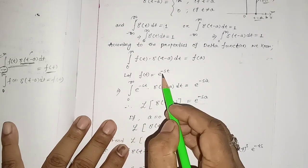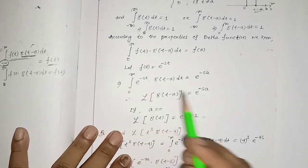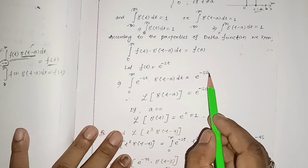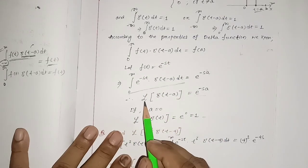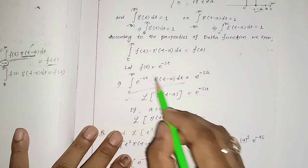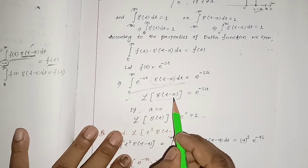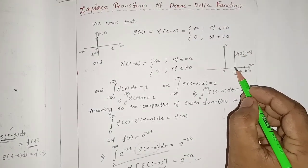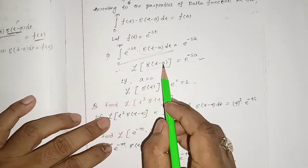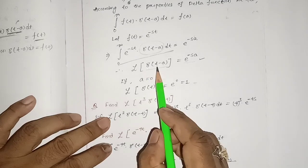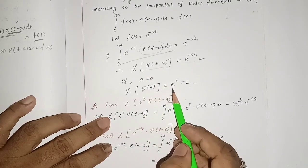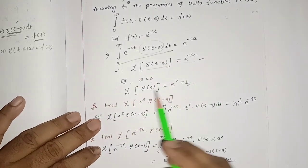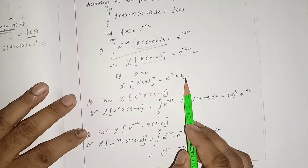Now, using this property, if we consider f(t) = e^(-st), we substitute e^(-st) into the integral: ∫₀^∞ e^(-st) δ(t - a) dt = e^(-sa). This is nothing but the Laplace transform of the delta function. Therefore, the Laplace transform of δ(t - a) is equal to e^(-sa). If the point a equals 0, then the Laplace transform of δ(t) equals e^0 = 1.